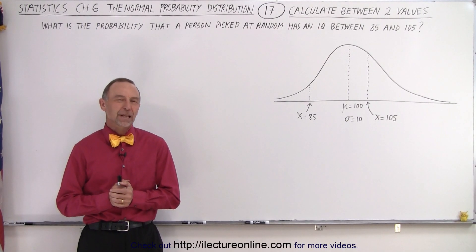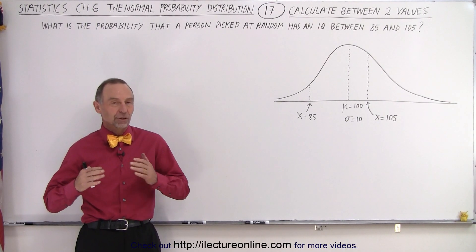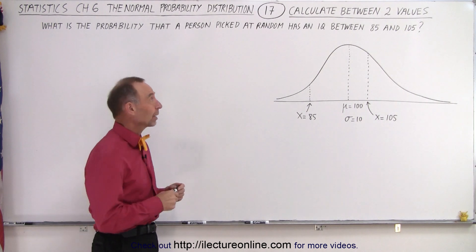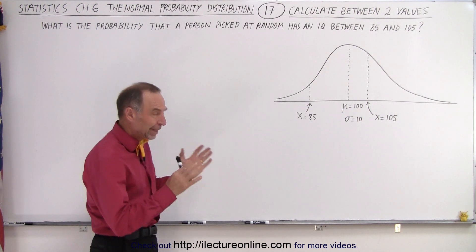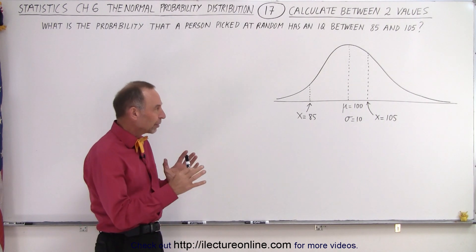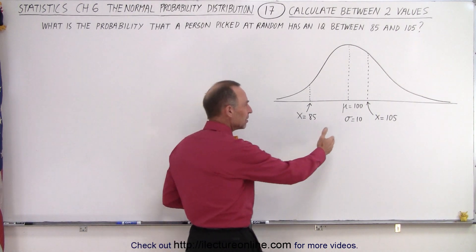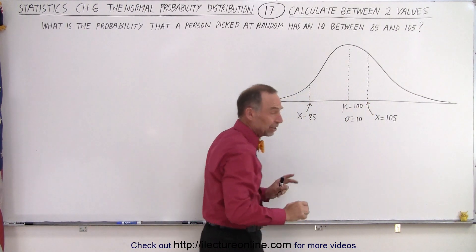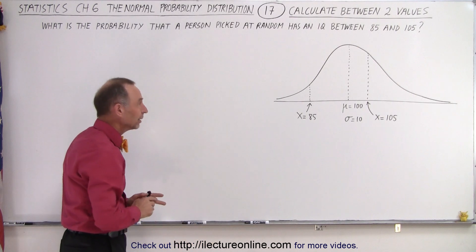Welcome to iLecture Online. Now let's try to expand things just a little bit more. What we're going to try to do is pick two values, one on either side of the mean. It doesn't have to be on either side of the mean, it could be both on the same side, doesn't matter.